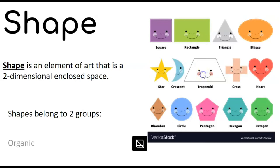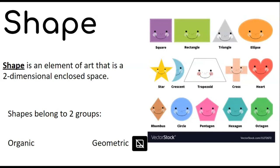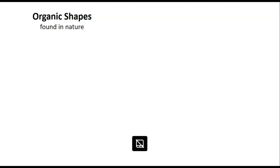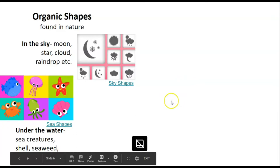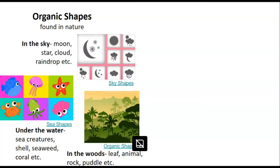Shapes can belong to two groups: organic shapes and geometric shapes — things that we learned about in first grade, so hopefully this is a review. Organic shapes are found in nature. There are three basic places I like to think about: in the sky — moons, stars, clouds, raindrops; under the water — sea creatures, shells, seaweed, coral; and in the woods — leaves, animals, rocks, puddles. Those are our natural shapes.